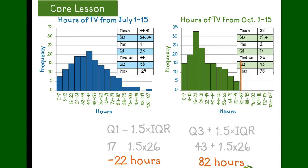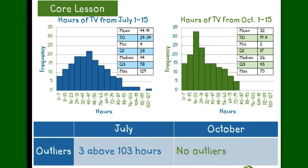So, let's put that information into our chart. We can now see that there are at least 3 households who watched an unusually high number of hours of television in July.